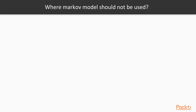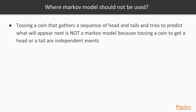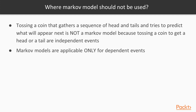Let's remember where Markov models should not be used. Tossing a coin that gathers a sequence of heads and tails and tries to predict what will appear next is not a Markov model, because tossing a coin to get a head or a tail are totally independent events. In weather forecasting, if today is rainy, there is a dependence that yesterday was also rainy. But in a head-and-tails coin toss, all events are independent. So Markov models are applicable only for dependent events.